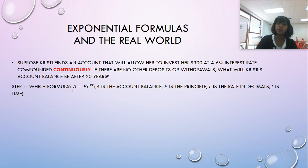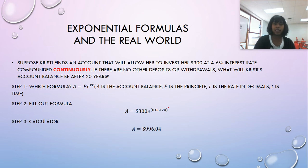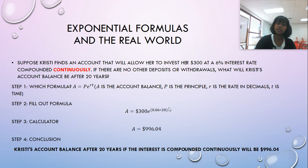So in this particular instance, I use a different formula. We call this the PERT formula. Because it is compounded continuously, we get to use that fancy natural base, e. So I plug in everything that I need. In this instance, you have no n. You just have the P, the R, and the T. I throw it in my calculator, and look at that. She now has $996.04.